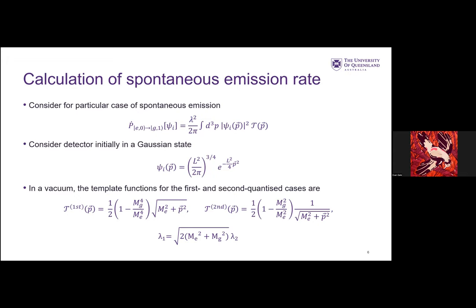We have to choose some initial state for a detector, if you look at our transition rate functional. We, in this case, pick a Gaussian state, which is a fairly sensible state to choose. One might also consider something like a plane wave, but due to the non-normalizability of plane waves, you can't really get a result out, actually. If you do all the calculations to derive the template functions for the first and second quantized models, in this case, spontaneous emission, the detector's initially in the excited state, the field's in the vacuum, it falls to the ground state and we emit some photon.